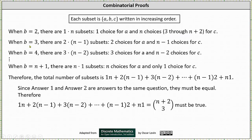When b is equal to three, there are two times the quantity n minus one subsets because there are two choices for a and n minus one choices for c. When b is equal to four, there are three times the quantity n minus two subsets because there are three choices for a and n minus two choices for c. And this pattern continues.